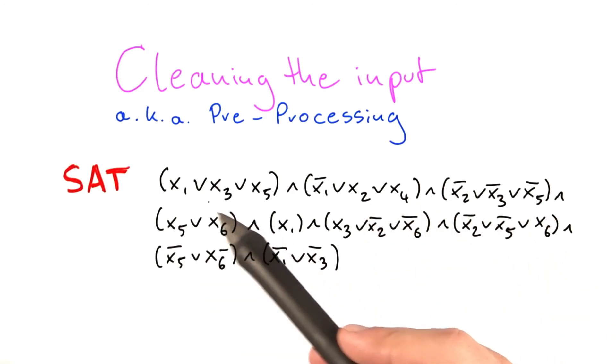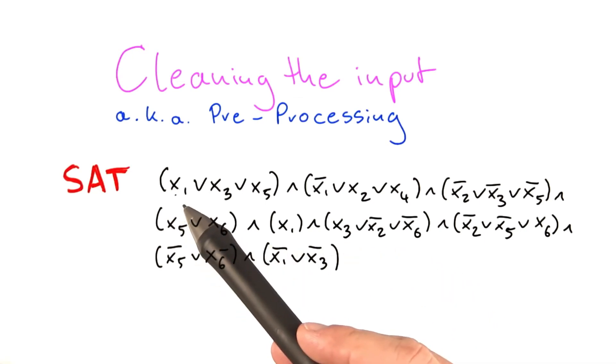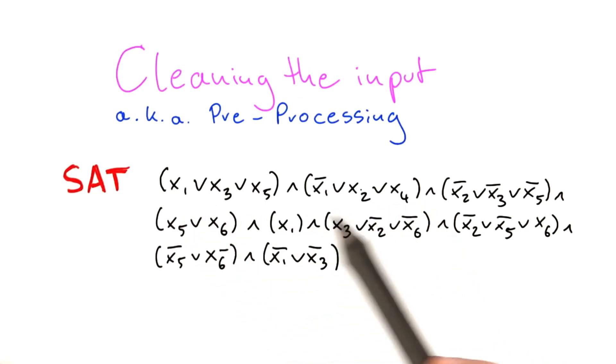Now, of course, this formula here doesn't have very many variables. It's just six variables, x1, x2, x3, x4, x5, and x6.